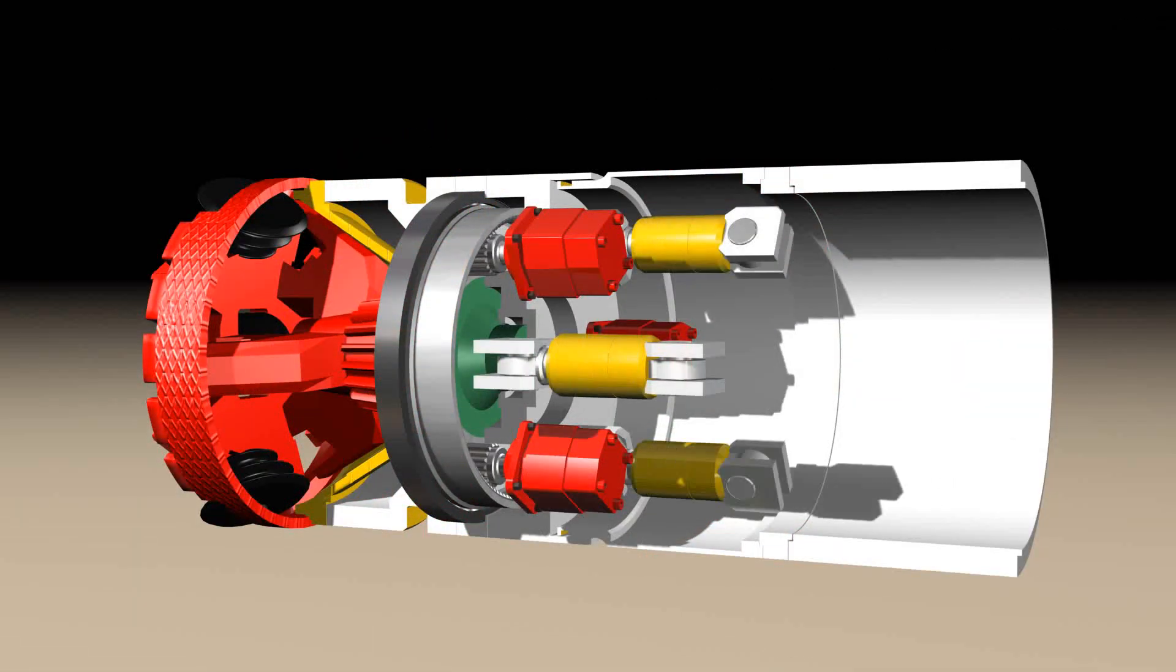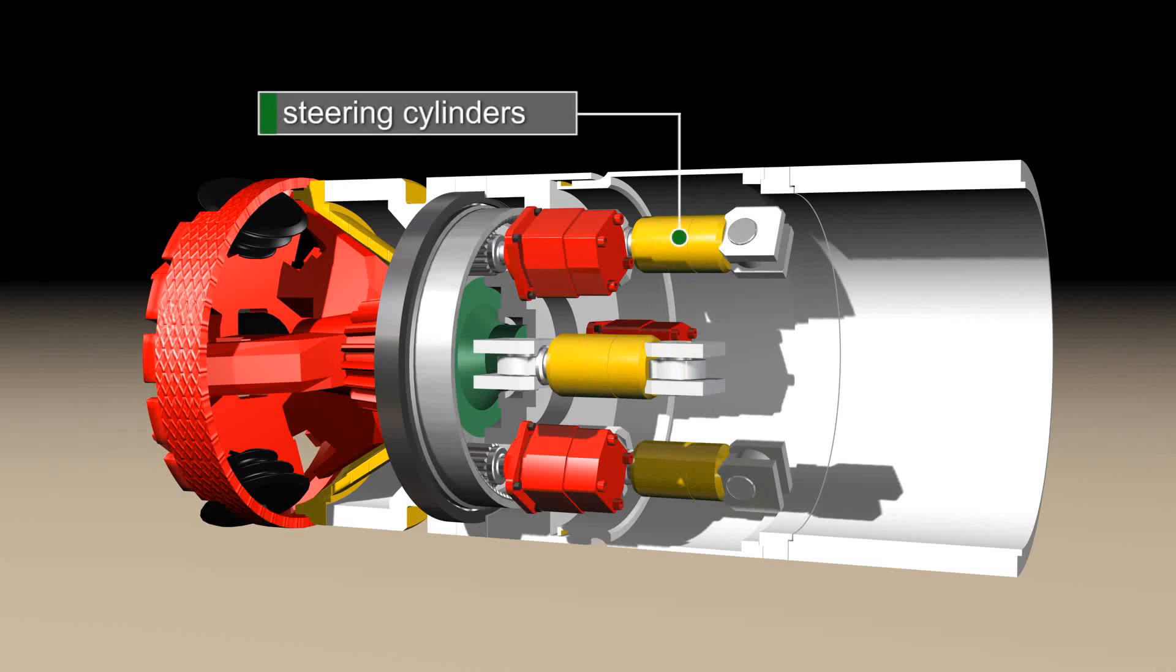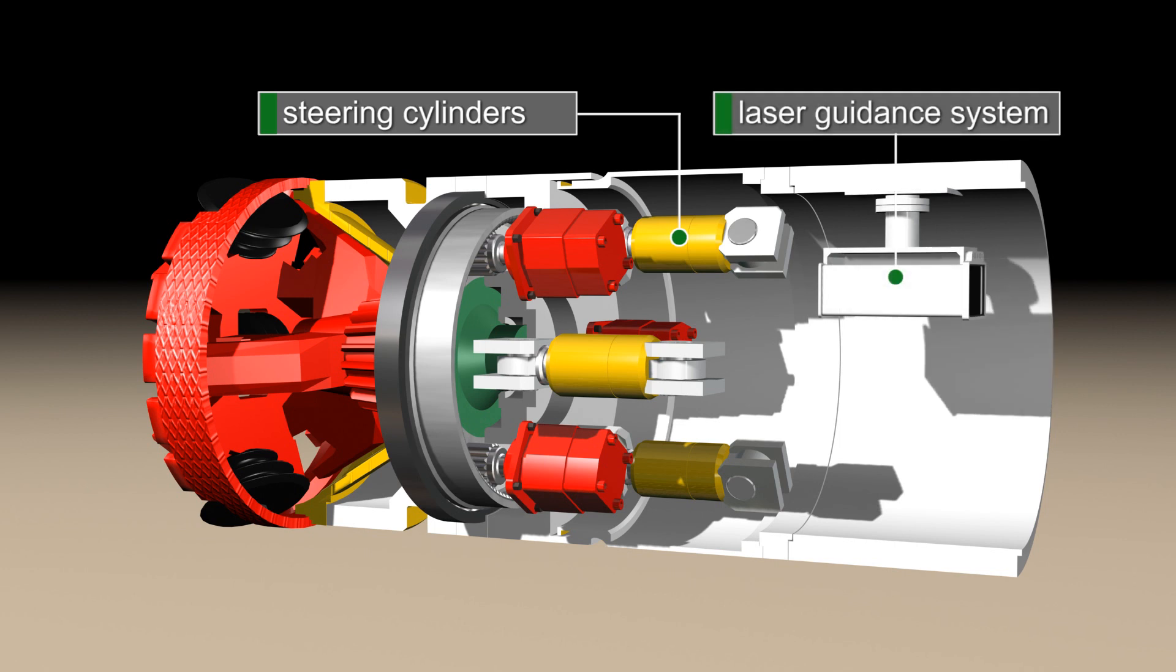The three steering cylinders enable the operator to correct the direction of the tunnel boring machine as well as control the alignment of the machine in curved drives. Therefore, the position of the cutter head is continuously updated with the help of the laser guidance system.